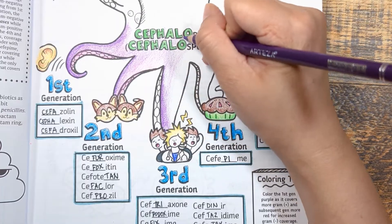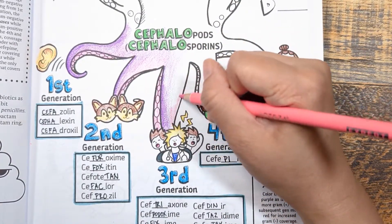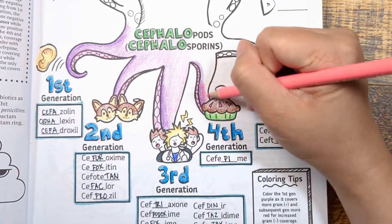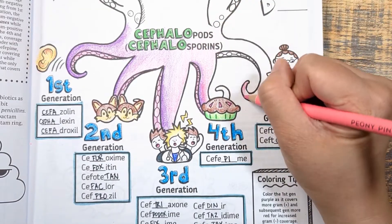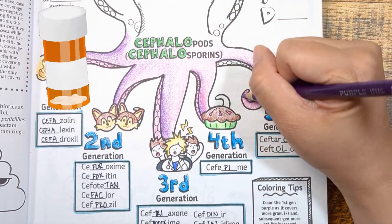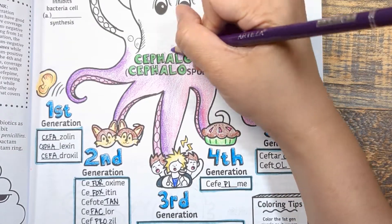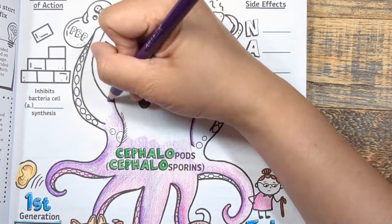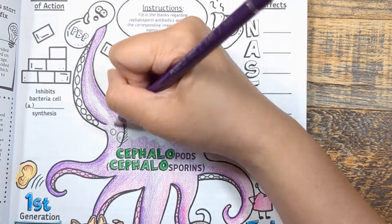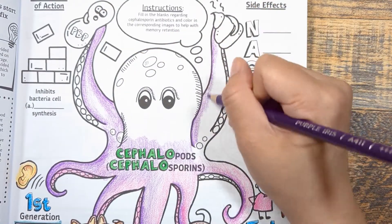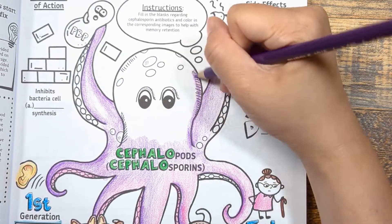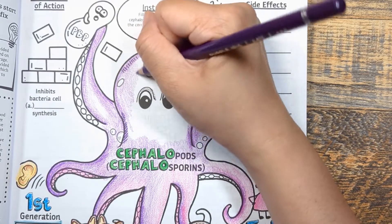Going from first to third generation, the coverage of gram-negative bacteria increases while coverage of gram-positive bacteria decreases. And since gram-negative bacteria stains a pinkish red on a gram stain, let's color the second and third tentacle in a mixture of purple and red to remind ourselves that second and third generations start to have more gram-negative coverage. The fourth and fifth generation are unique because their coverage is broader, with ceftazidime, cefepime, and ceftolozane covering pseudomonas, while ceftaroline is the only cephalosporin that covers MRSA. This class of antibiotics is used to treat a variety of bacterial infections including pneumonia, cellulitis, and urinary tract infections. Don't get overwhelmed trying to memorize everything now — instead, understand the general idea of what each generation covers, as well as the unique ones that cover pseudomonas and MRSA.